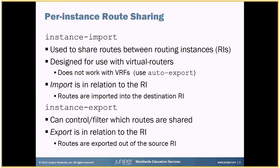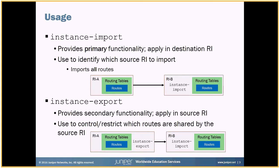That may not always be what you want. So there's a related feature called instance export, which provides control or filtering capabilities for which routes are actually shared. Export here is in relation to the routing instances, and the instance export statement is used on the source side for exporting routes out of that instance into a destination instance. So for instance import, you apply it on the destination side and identify which source routing instance to import — it imports all the routes. The instance export statement is applied on the source instance and lets you control or restrict which routes are shared to the destination.